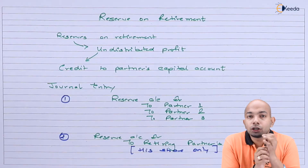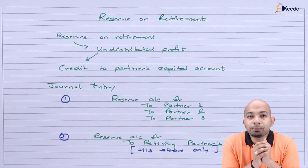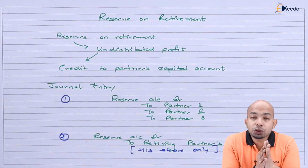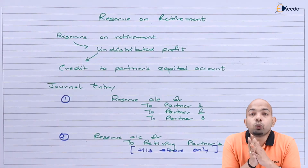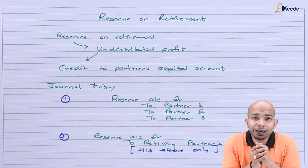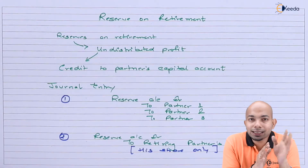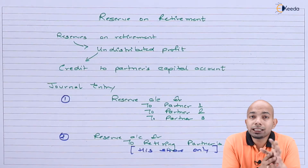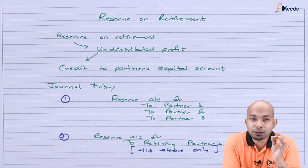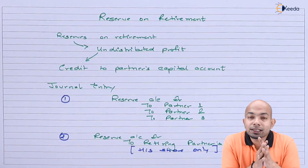In the second situation, the entry is: reserve account to retiring partner's capital only. This means only the retiring partner is credited their share, while the continuing partners still carry the existing reserve balance in their accounts. These two journal entries are passed specifically as per the question's requirement.